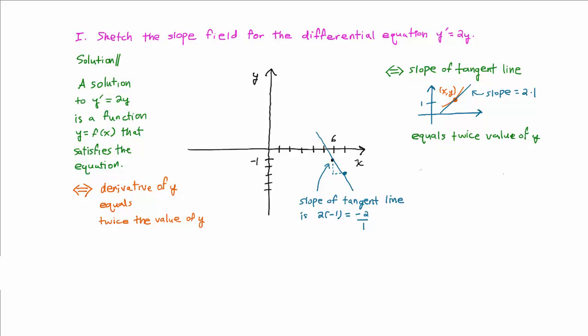Next, we could graph the tangent line at lots of other points to help us visualize the graph of y equals f of x. But if we draw lots of tangent lines, the picture would get messy. Therefore, instead of graphing the entire tangent line, we'll just graph a small segment of it.